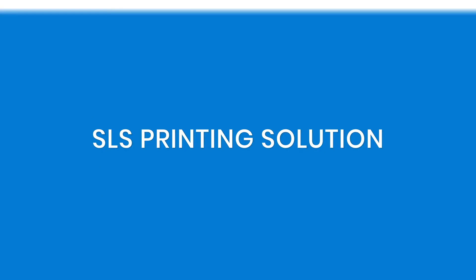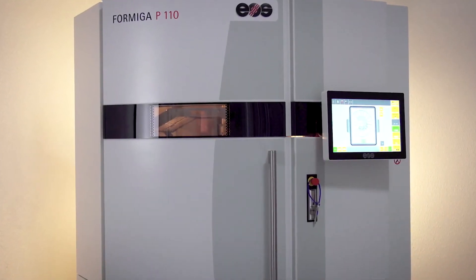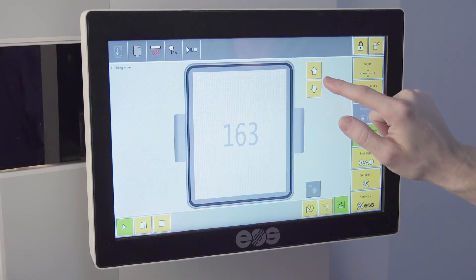The EOS Formiga P100 is a German-made 3D printer with a print volume of 220x250x300mm. Since it uses no binding agents or support structures, this lowers the operational cost to only the cost of materials and electricity. This machine sells for a whopping $175,000.